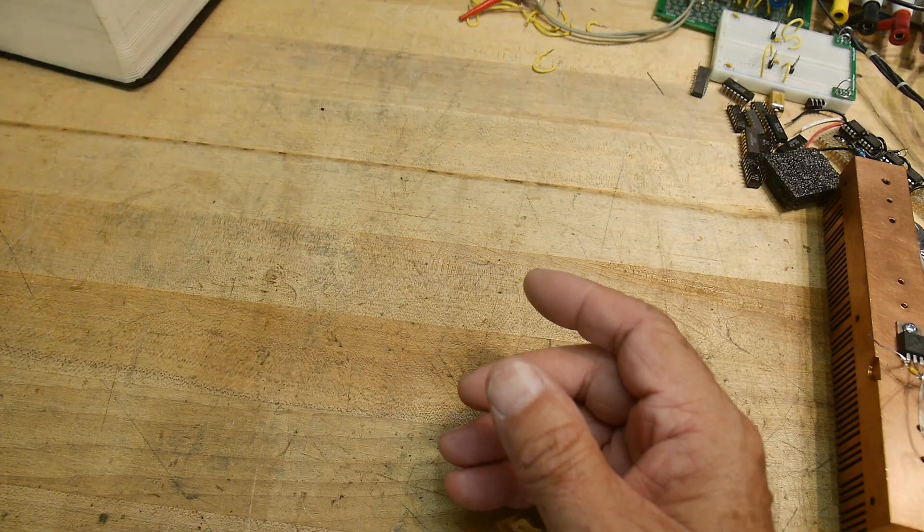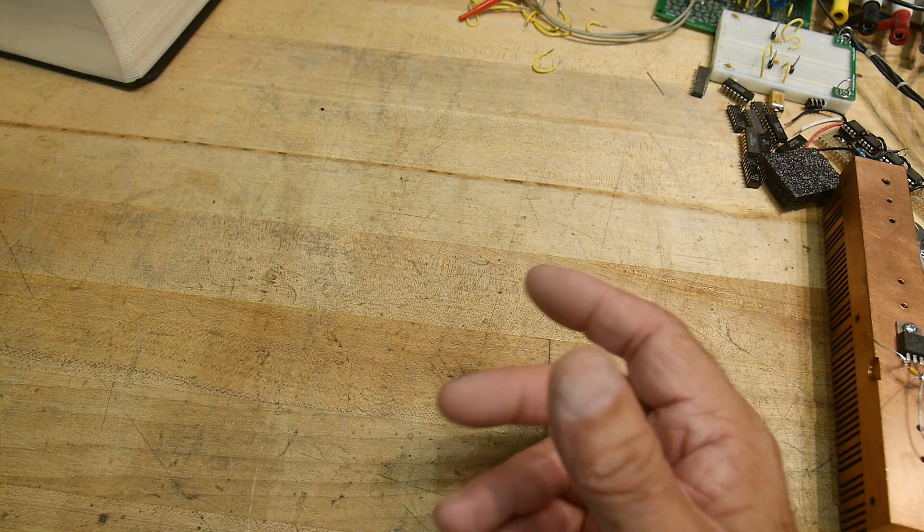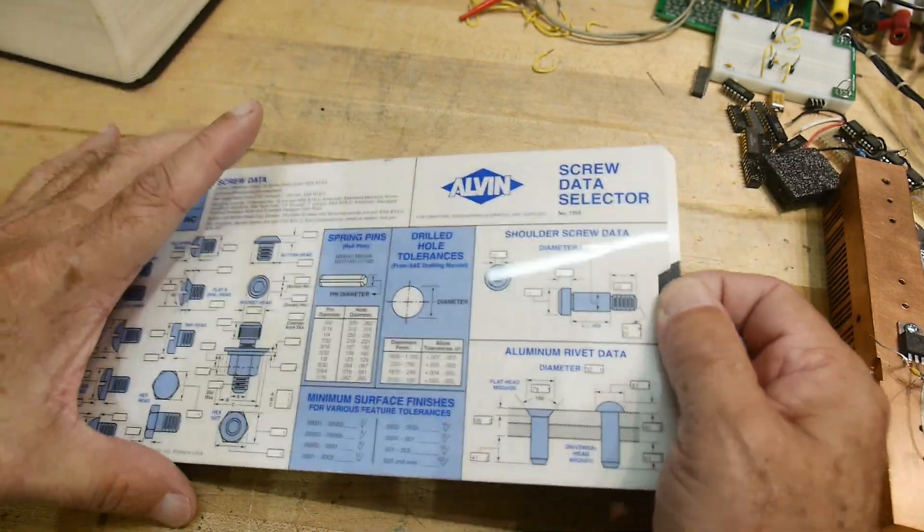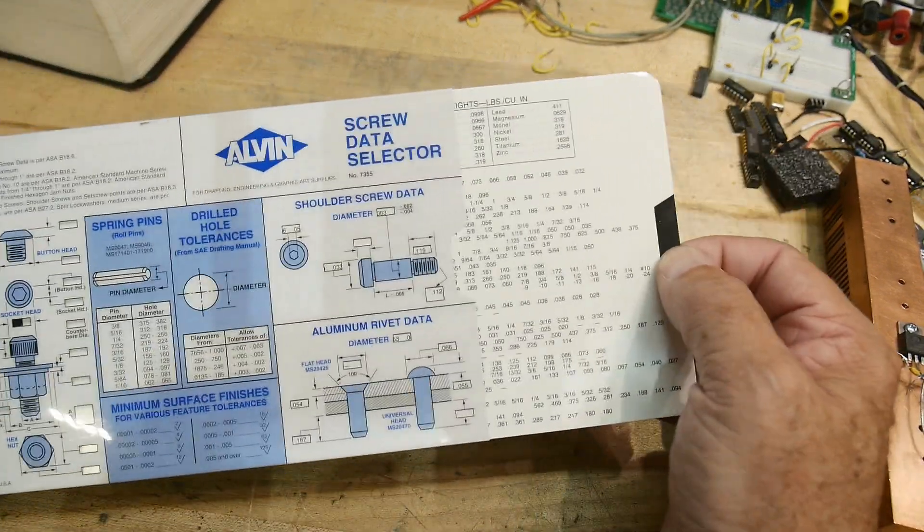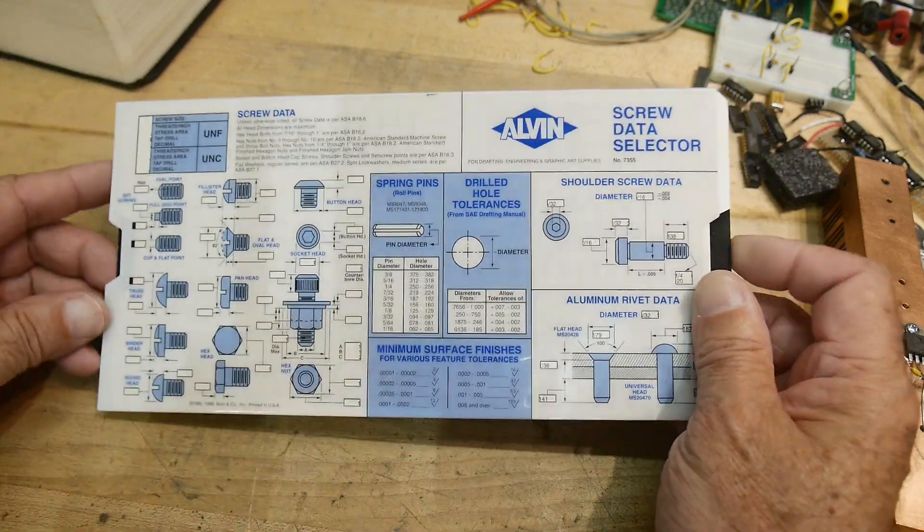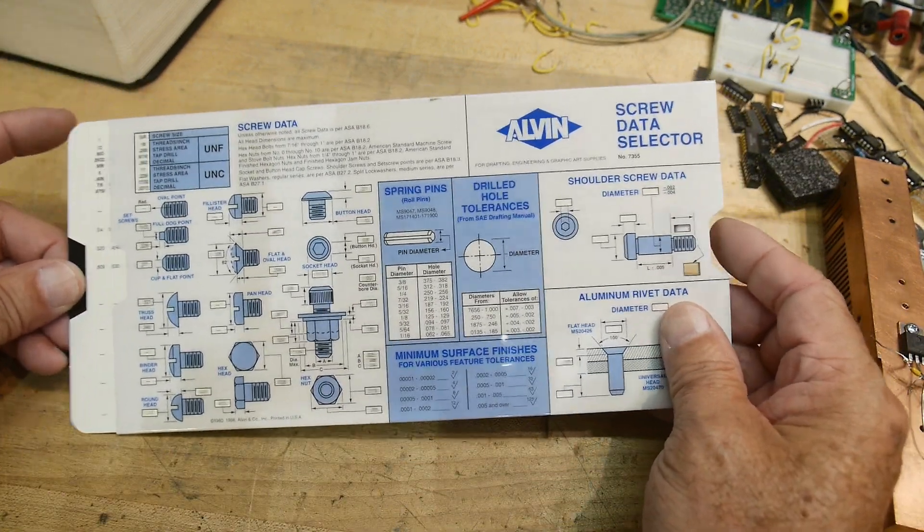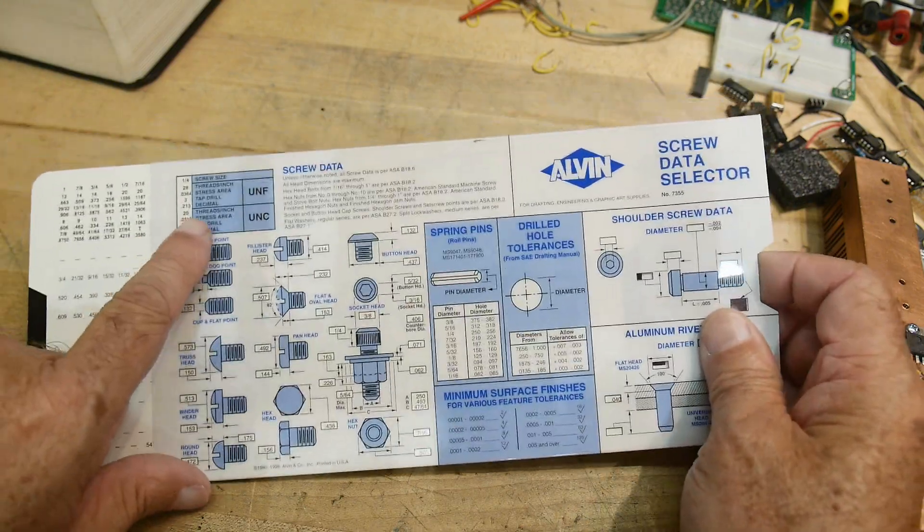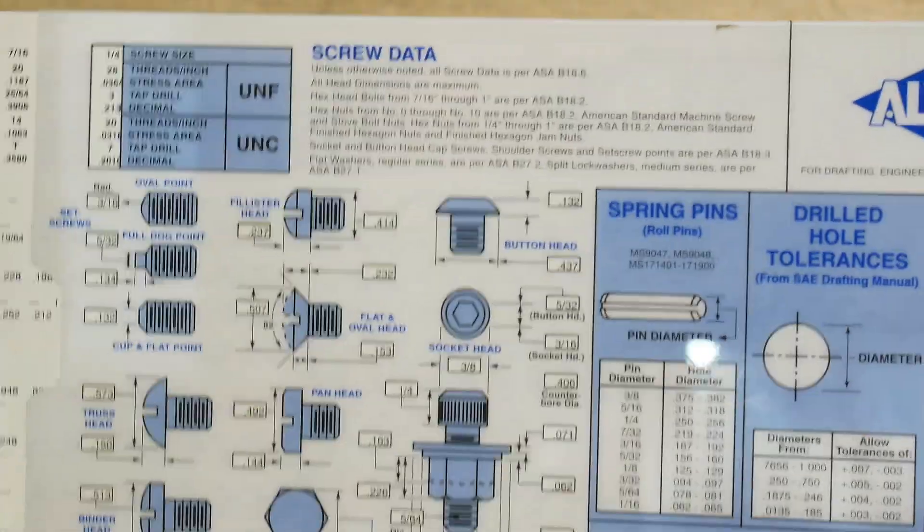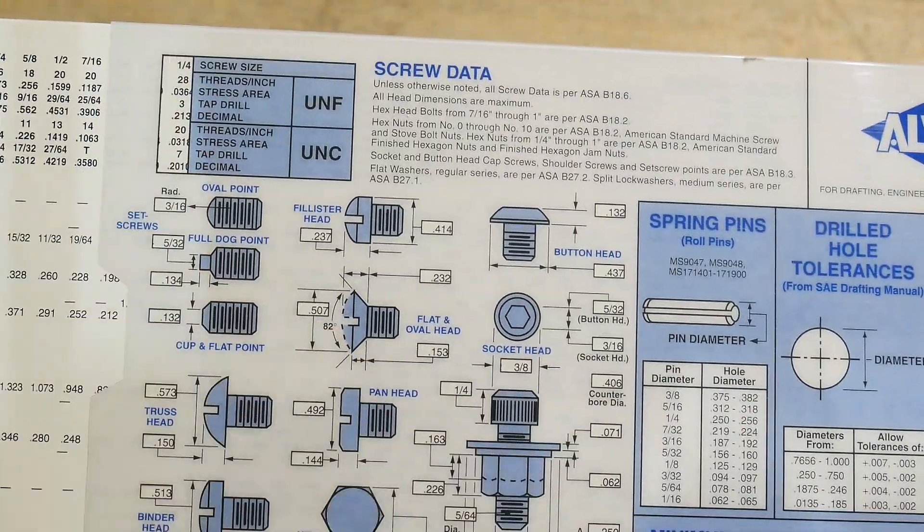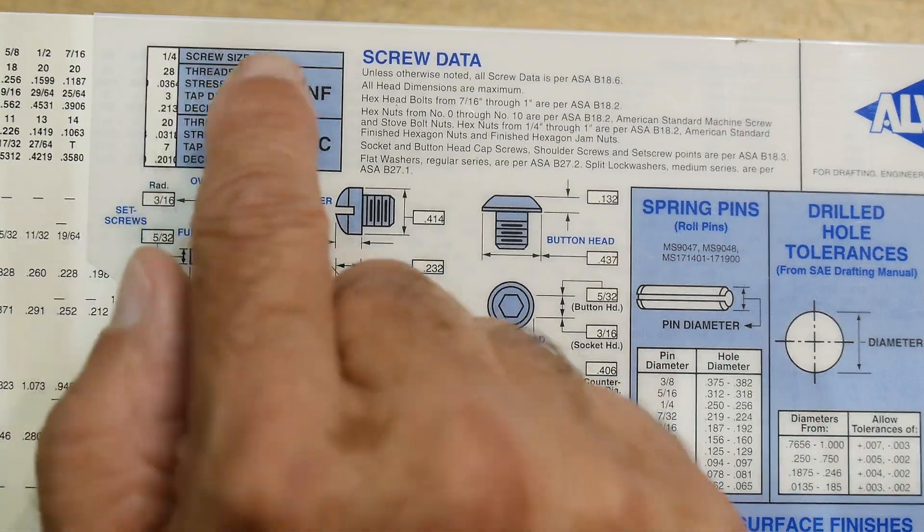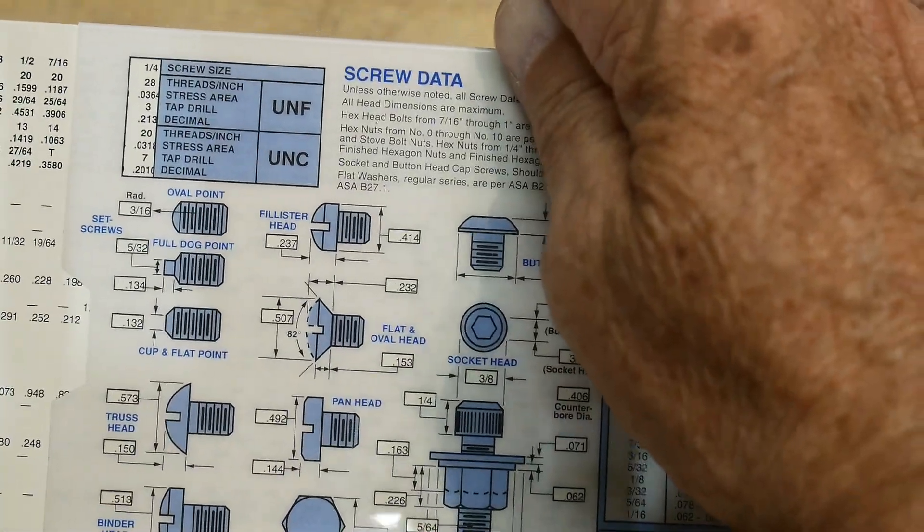So there are these things that you can buy. I have one that's made by Alvin, and it is one of those cards that you move in and out, and then there's windows that show information. You can put it on a particular size, like here, I put it on a quarter inch. This is going to be really hard to film, but you put in a quarter inch and it tells you how many threads per inch is for fine and coarse, and what's your tap size and your drill size and all that kind of stuff.